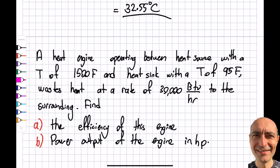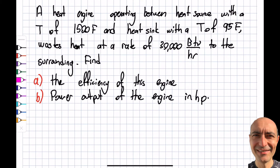Now I want to move on to the second question. A heat engine operates between a heat source at T = 1500 Fahrenheit and a heat sink at 95 Fahrenheit, wasting heat at a rate of 30,000 BTU per hour to the surroundings. Let me draw the diagram again: this is QH, this is QL, this is W_net_out.